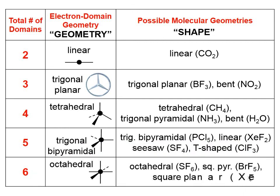For octahedral electron domain geometry: if all six domains have an atom, the molecular geometry is also octahedral. If five of the six have atoms, leaving one unshared pair, the shape is square pyramidal. If four atoms are present with two unshared pairs, the shape is called square planar.